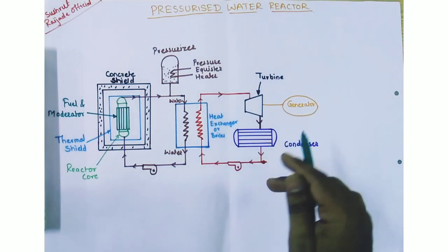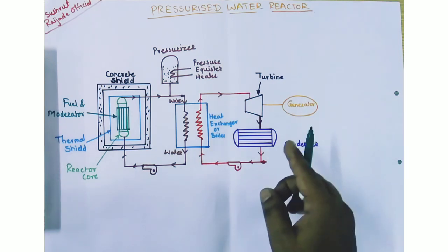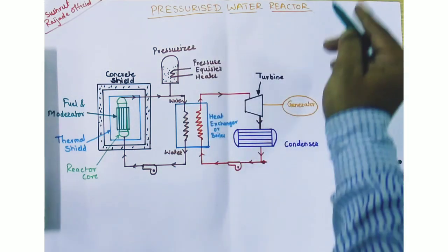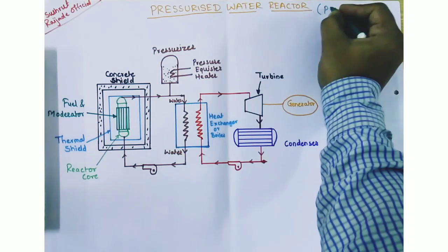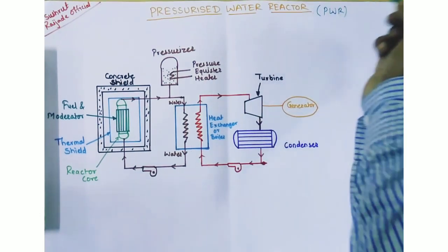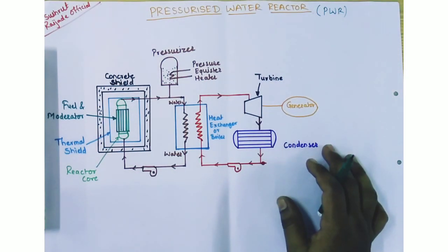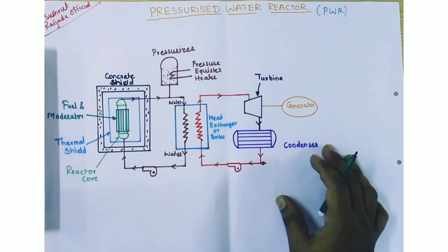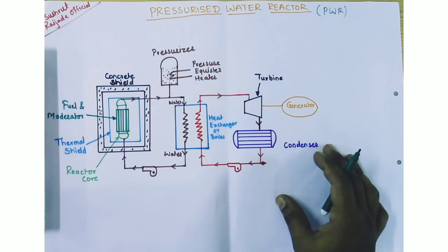The thermal reactor has three types: first is a pressurized water reactor that is PWR, second type is a BWR that is boiling water reactor, and third type is a GCR that is gas cooled reactor. The fast breeder reactor has one type only — liquid metal fast breeder reactor that is LMFBR, which is also called a sodium graphite reactor, SGR.